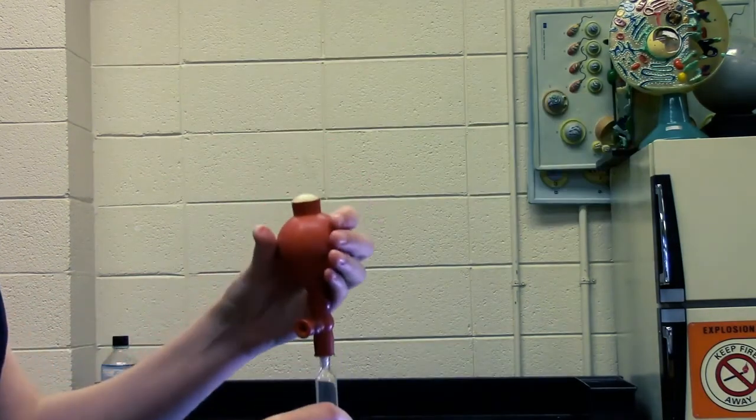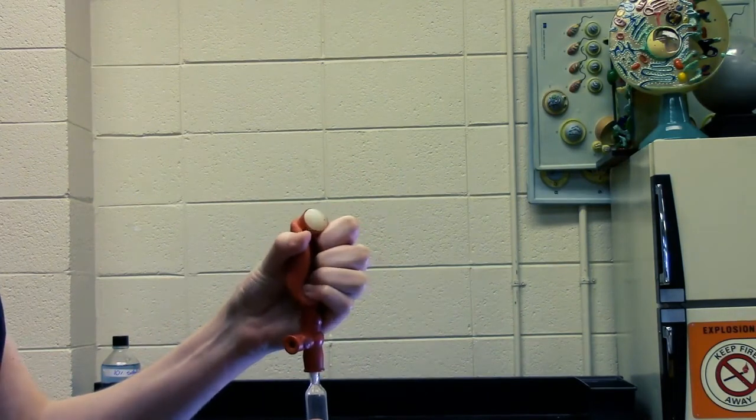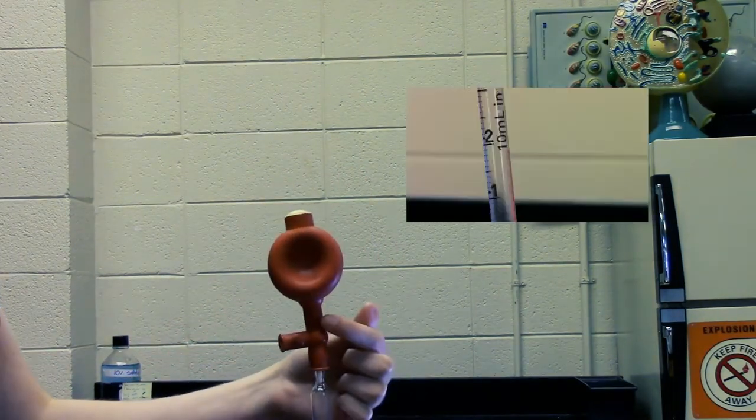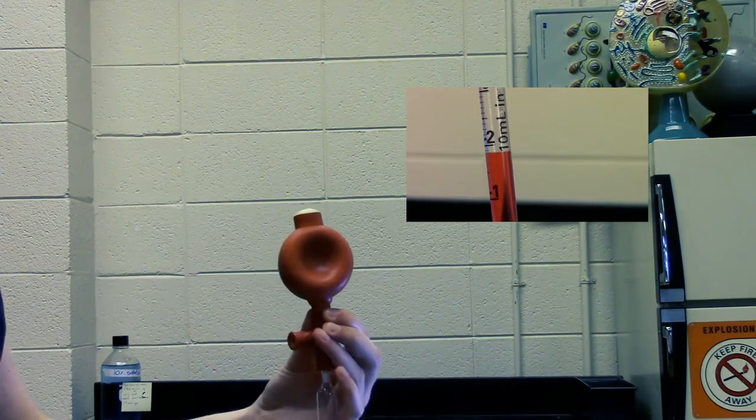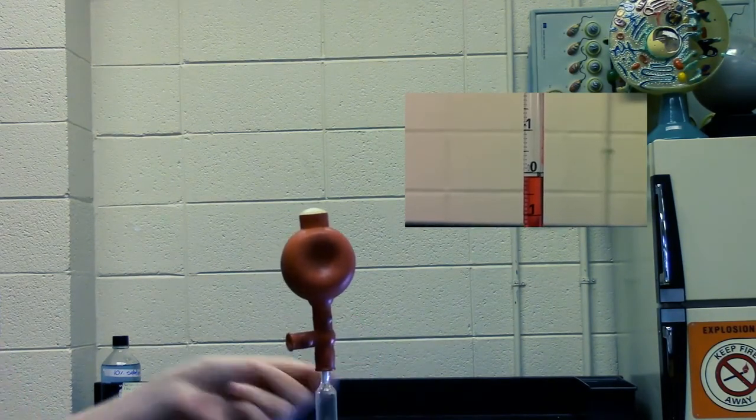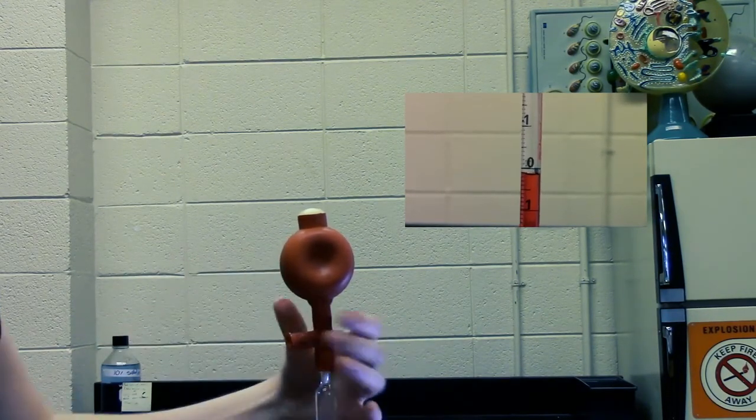This pipette is like a turkey baster. First, squeeze the bulb, then press a knob to take in the liquid and then press a knob on the side to release it.